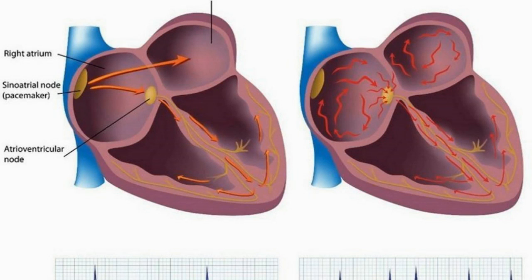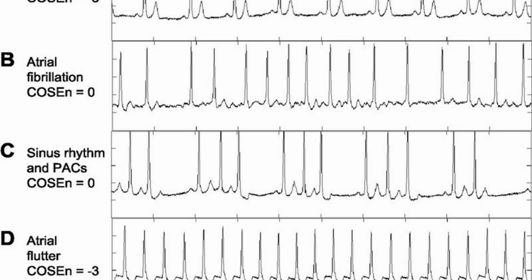Difference between atrial fibrillation and atrial flutter. Atrial fibrillation and atrial flutter are two common rhythm abnormalities of the heart. The heart contracts rhythmically. There are autonomic pacemakers in the heart — the SA node and the AV node. The SA node is located in the right atrium and discharges rhythmically at a rate of 60–100 beats per minute.